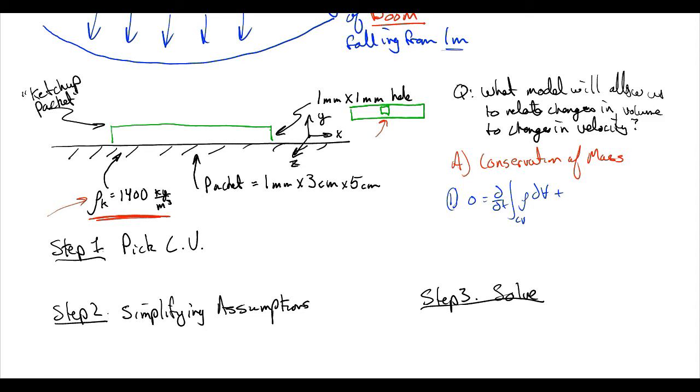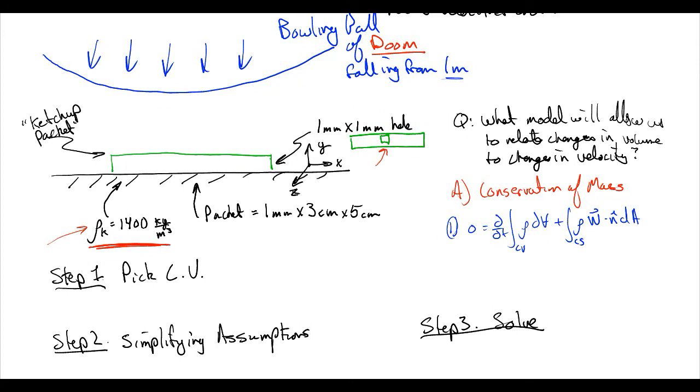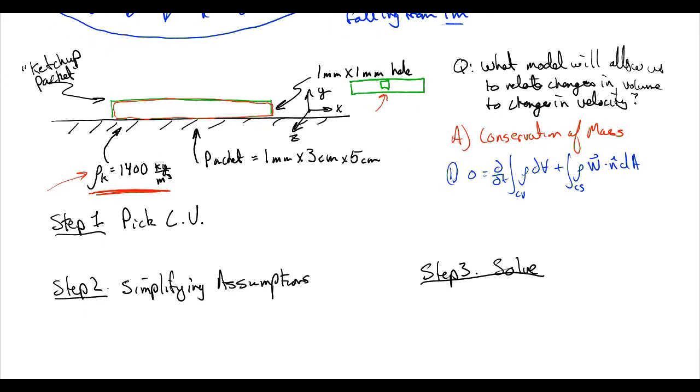Now we need to pick a control volume. So we're going to draw our control volume in red. And I'm going to pick a control volume that is just on the inside of this ketchup packet. Okay. So we picked a control volume.